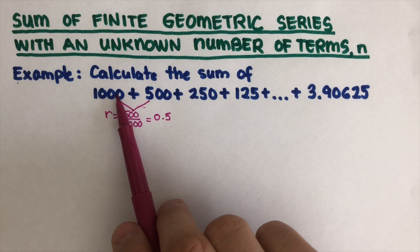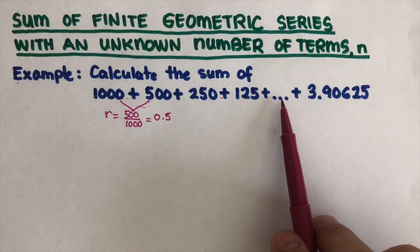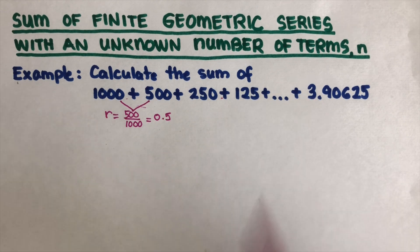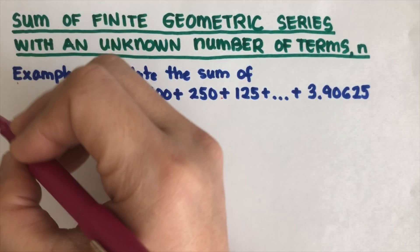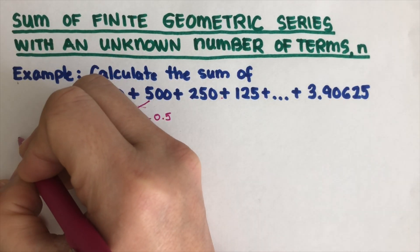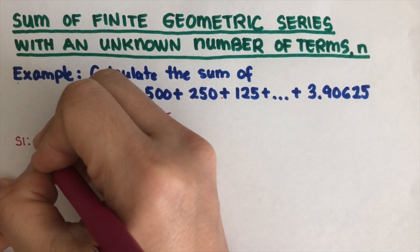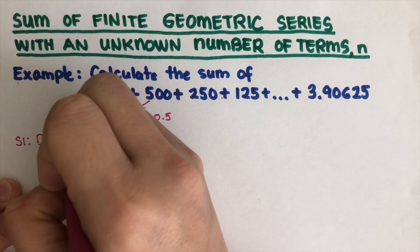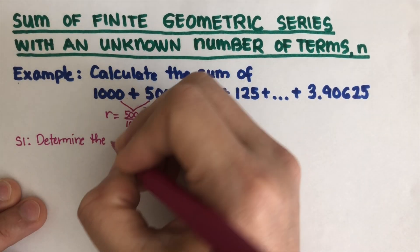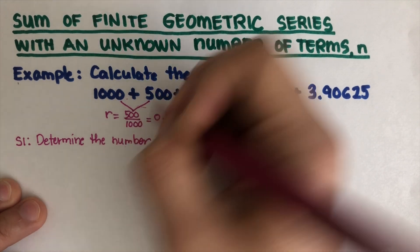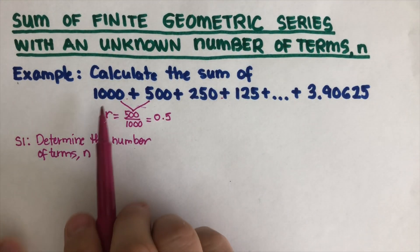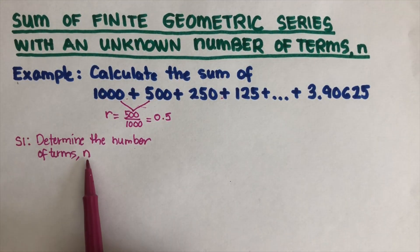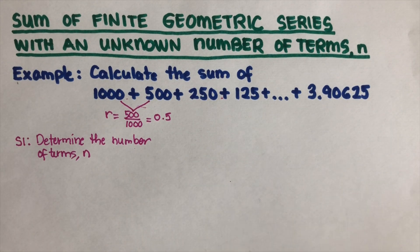If we count the given terms, that's one, two, three, four — but the three dots tell us there are more terms in between. We don't know how many, so we need to find the number of terms n first. We already have a₁ and r, but we don't have n, so that is what we are going to determine in Step 1.